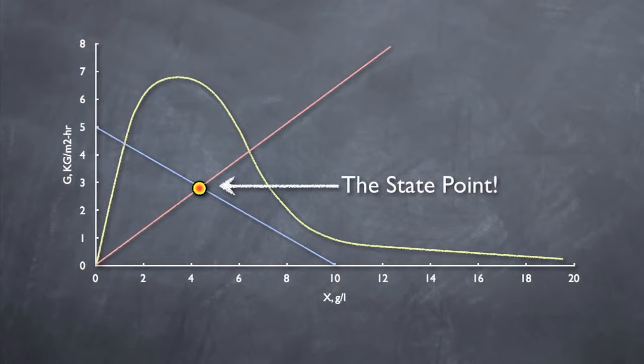However, getting the state point under the curve isn't the only goal. In order to ensure proper thickening of the sludge, we want to make sure that the entire underflow rate line to the right of the state point falls under the settling curve as well.